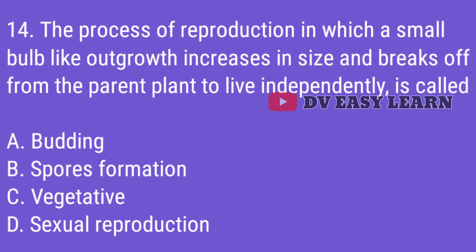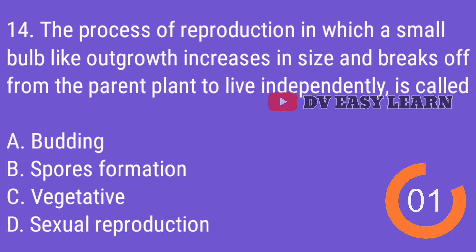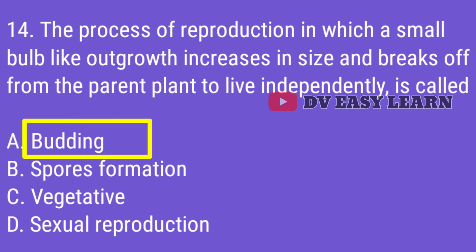Question 14. The process of reproduction in which a small bulb-like outgrowth increases in size and breaks off from the parent plant to live independently is called? Correct answer: Budding.